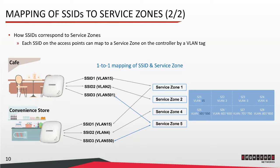As shown on this slide, at least one access point has been deployed at a cafe and a convenience store. Multiple SSIDs can map to the same service zone as long as they share the same VLAN tag. So SSID 1 on both access points maps to service zone 1 based on VLAN tag 15. Furthermore, SSID 3 on both access points maps to service zone 5 — one has VLAN tag 501 and the other has VLAN tag 550, but both map to service zone 5 because it has multiple VLAN tags from 501 to 550.